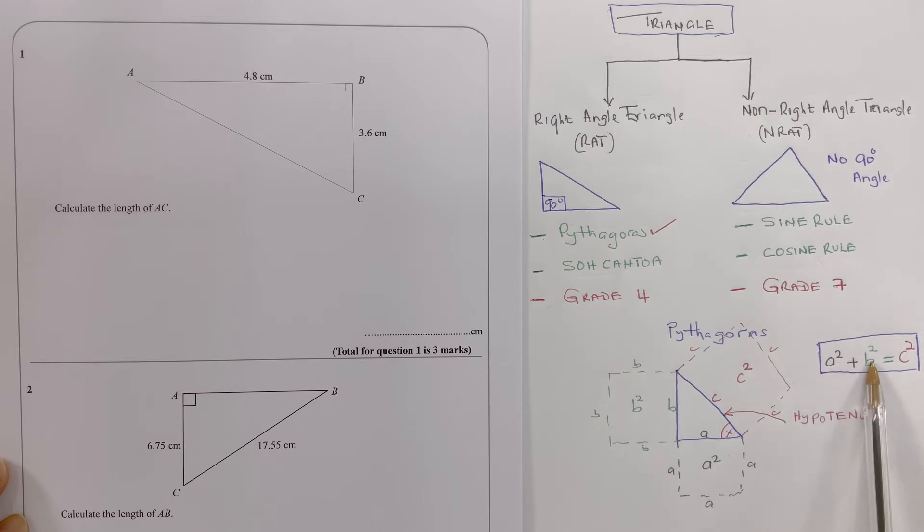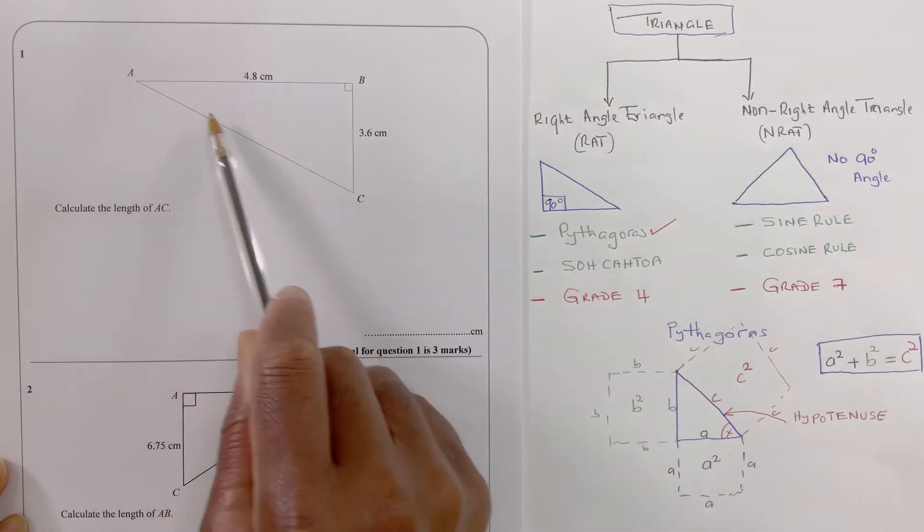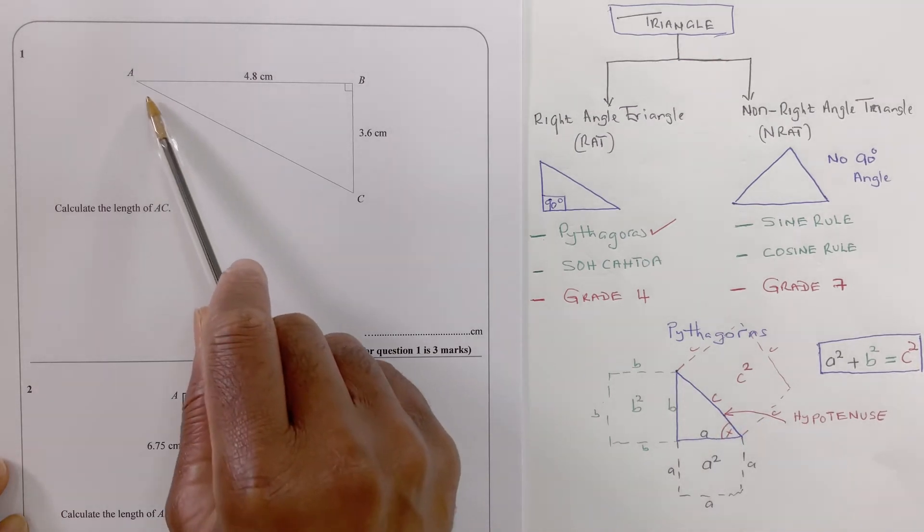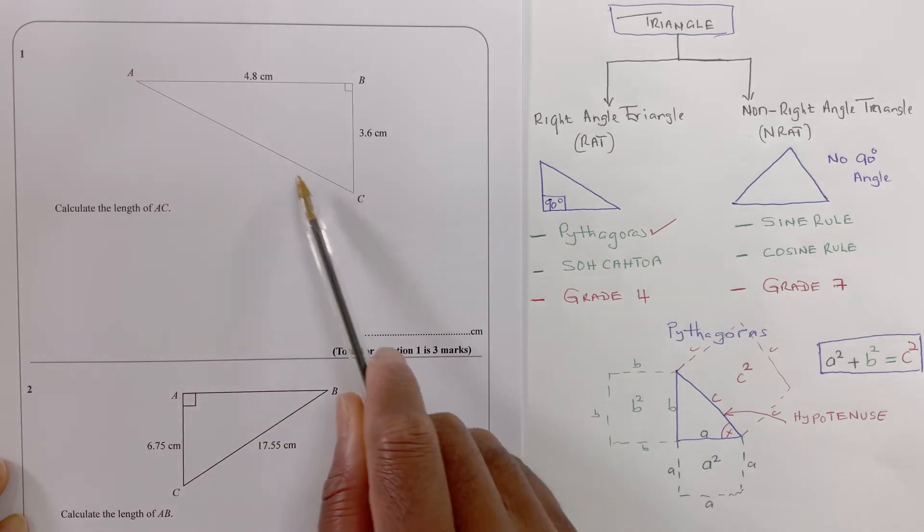squared plus b squared is equal to c squared. That means c squared is the longest side of the right angle triangle. You call that c, the hypotenuse, and so this is the hypotenuse. This would be